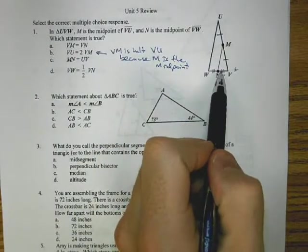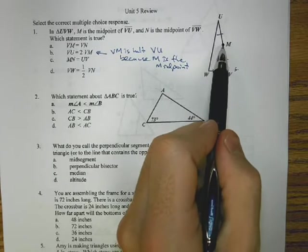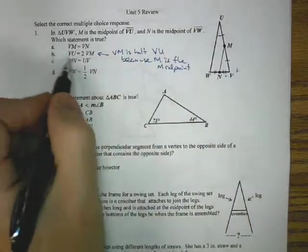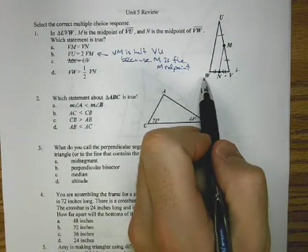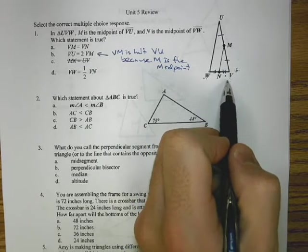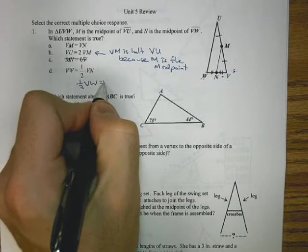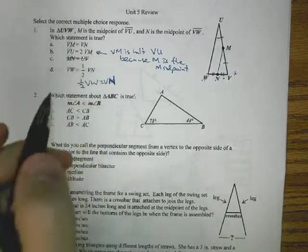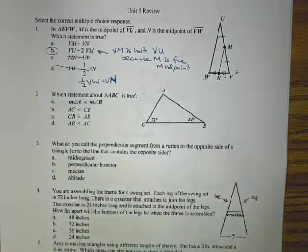We also know that VM is half VU because M is the midpoint. So that's actually looking like a really good choice. If we keep looking, MN and UV, those are not equal. VW is half VN. Well, this one looks close, but what we'd actually want is one half VW equals VN. So we're going to go with B.